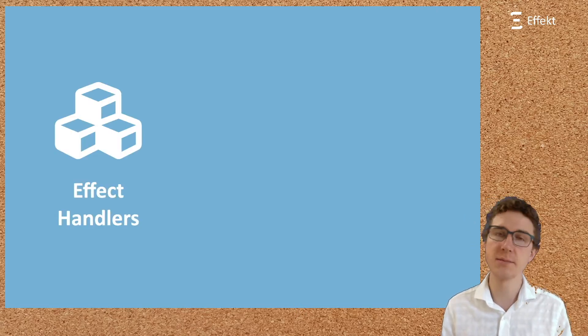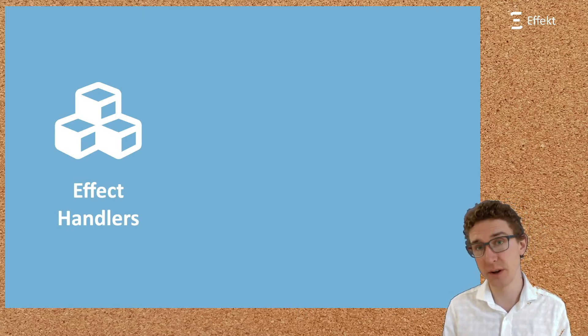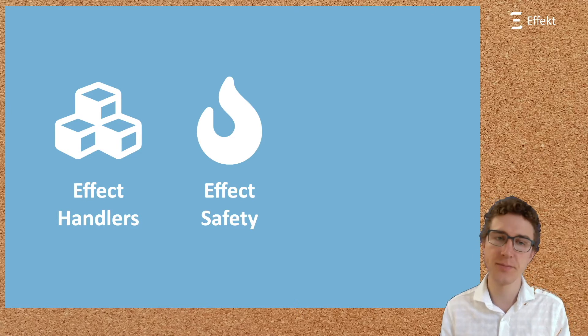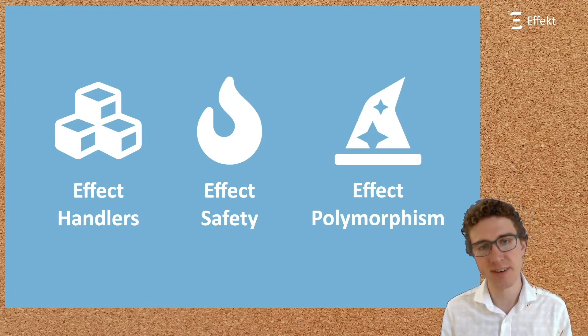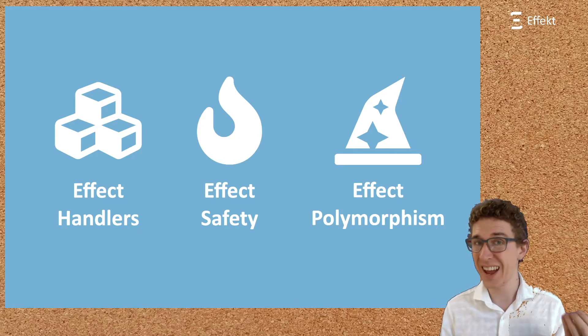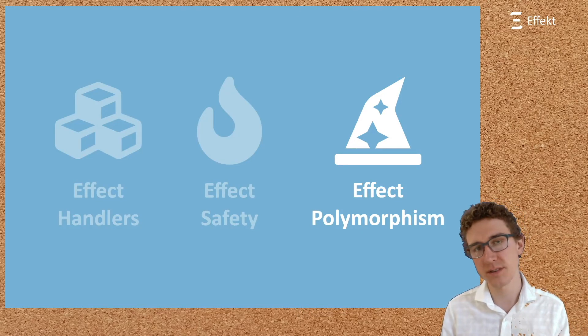Effect Handlers, a recent mechanism to structure complex control flow patterns. Effect Safety, that is, guaranteeing that all effects are eventually handled. And Effect Polymorphism, that is, describing programs which are polymorphic in the used effects. While Handlers and Effect Safety are really important, if this talk is about anything, then Effect Polymorphism.